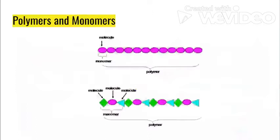Looking at our first picture, we have a polymer chain, and the monomer is just one pattern being repeated over and over again. The pink circles are just that pattern repeating — one circle is the monomer, and the polymer is the whole chain together. A monomer can also be a little longer, like the bottom picture that goes diamond, oval, triangle. Those three molecules together are one piece of the pattern that gets repeated — those three are the monomer, and the polymer is the entire chain.